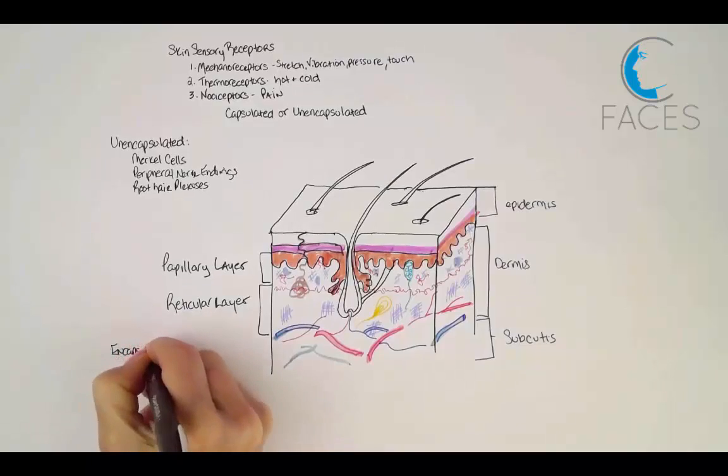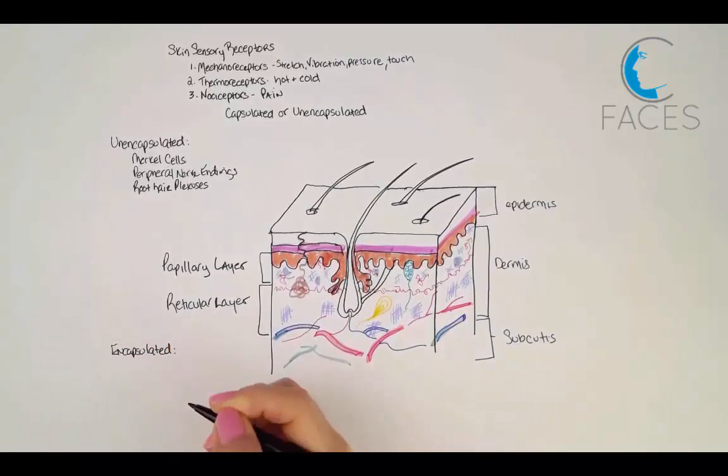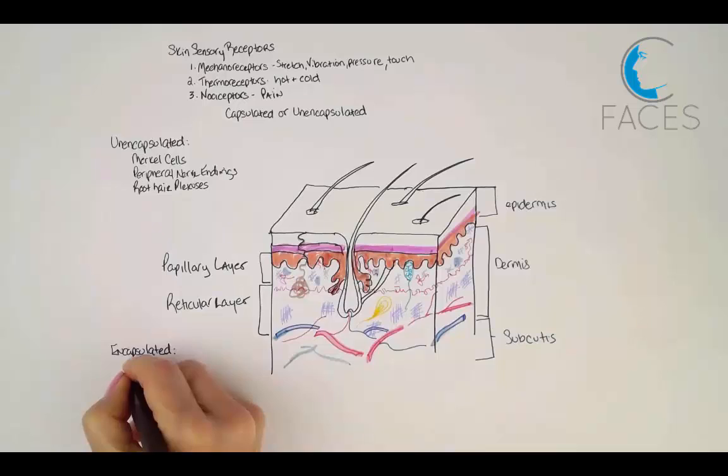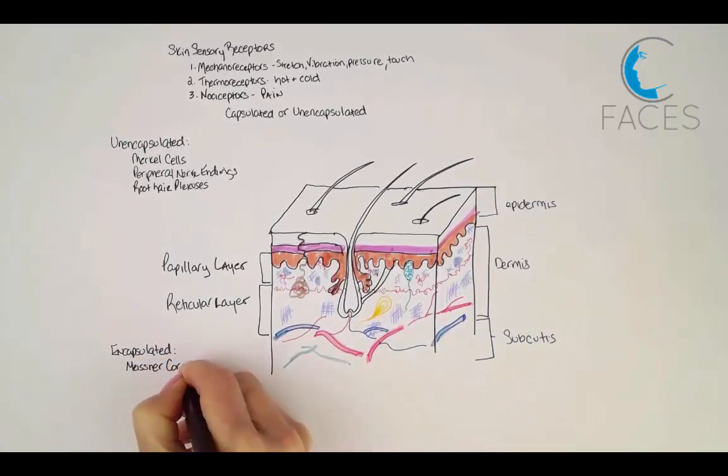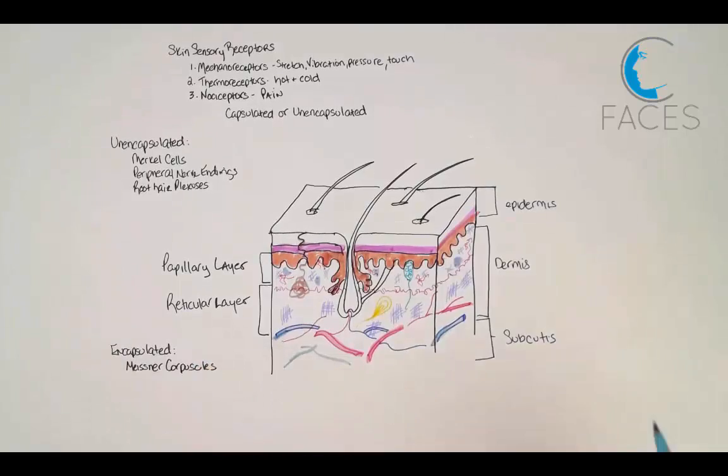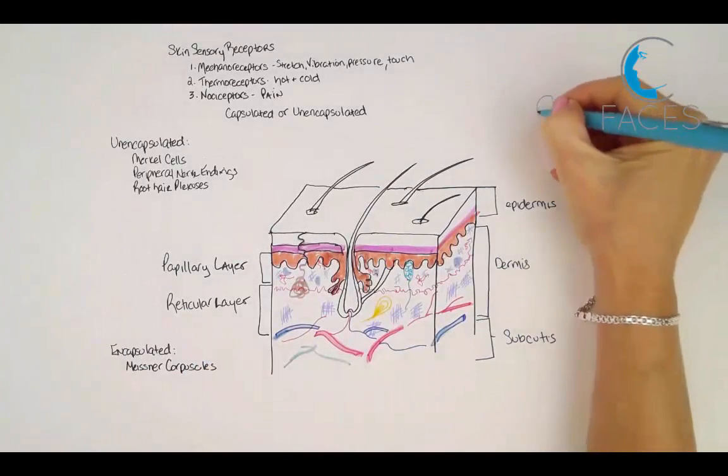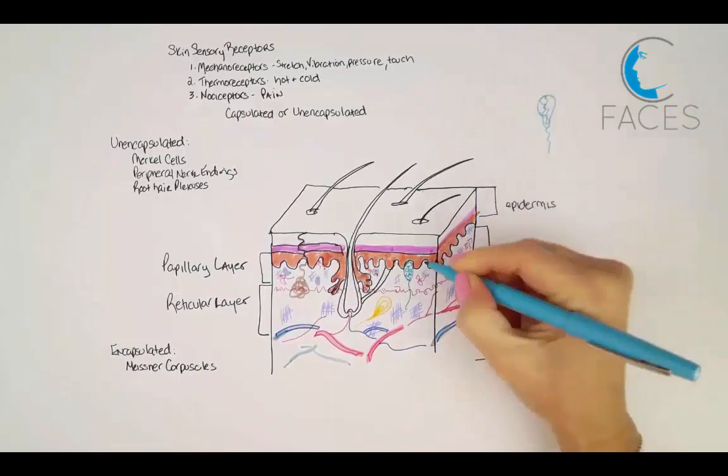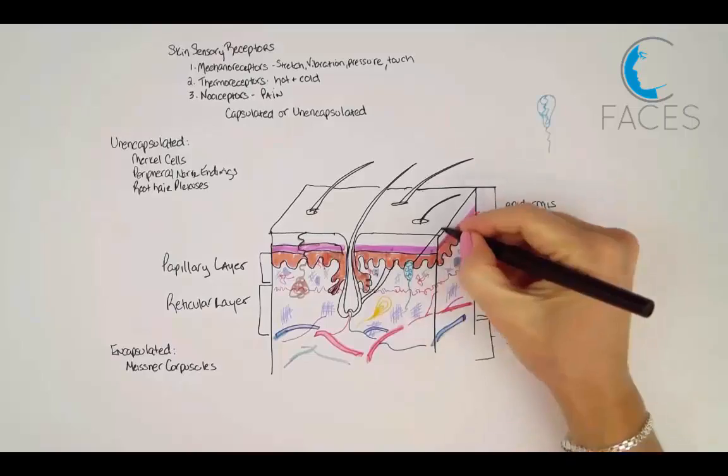Encapsulated receptors are mechanoreceptors that respond rapidly to stimuli on the skin. The first are Meissner corpuscles. These are sensory axons that wind around flattened Schwann cells. They're most numerous in our fingertips, palms, and soles, and they sense light touch temporarily against the skin when their shape is deformed. They're particularly numerous in our lips.